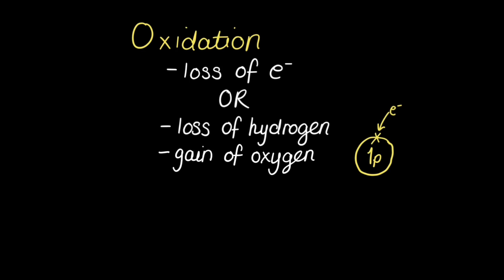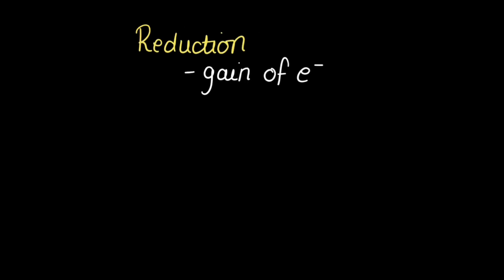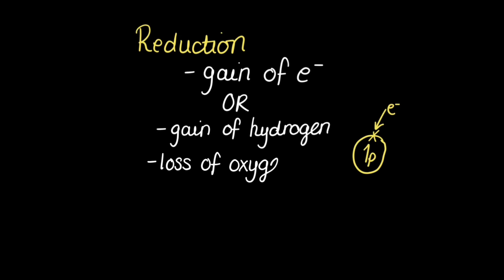The other way to identify oxidation is if there is a gain of oxygen. Conversely, reduction is a gain of electrons, but can also be identified by a gain of hydrogen. Once again, this is because hydrogen is made up of one proton and one electron. In addition, you can identify reduction by a loss of oxygen.